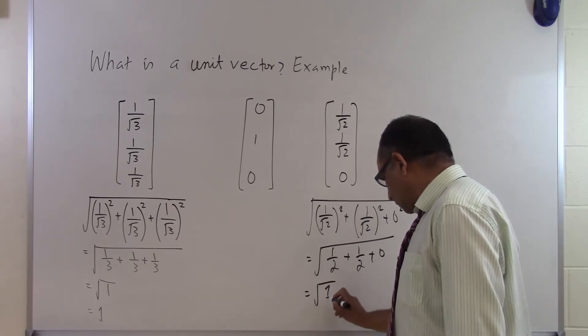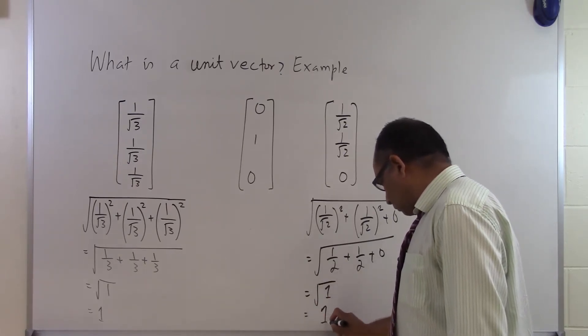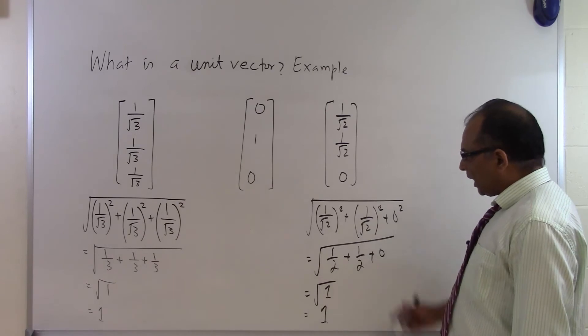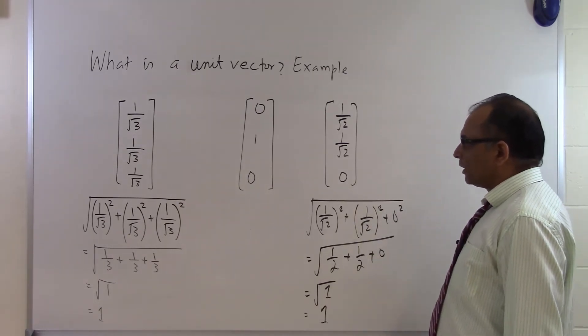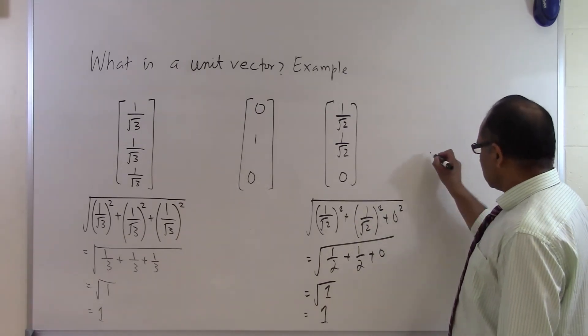I get square root of 1, and I get 1 from there. So that is also a unit vector. So you can come up with different examples for unit vectors like that. And that is the end of this segment.